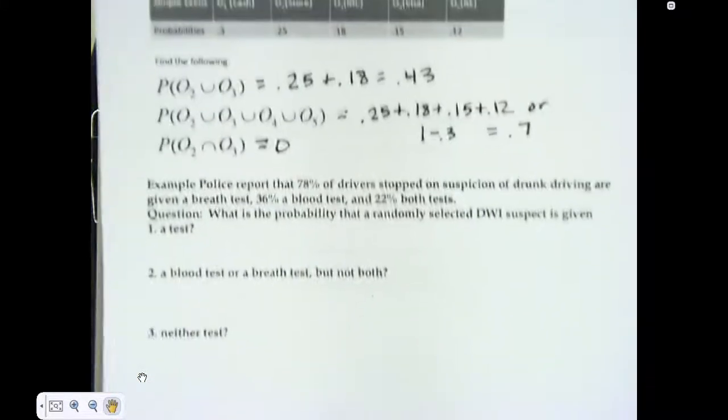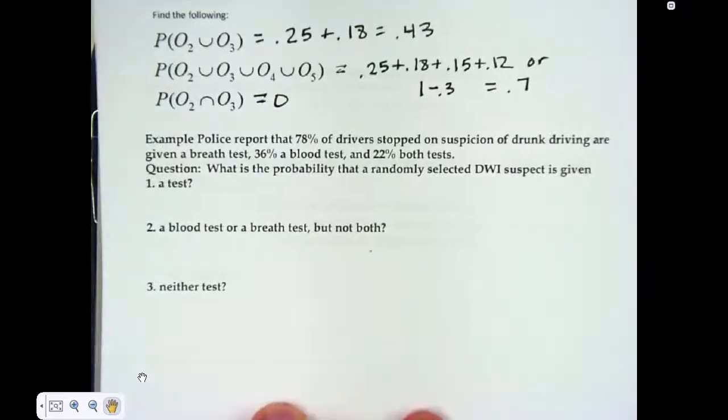Now, our last example problem. Police report that 78% of drivers stopped on suspicion of drunk driving are given a breath test, 36% a blood test, and 22% both. First, they want the probability of a test. There are some other questions here. If you want to make a Venn diagram for this, you can, or we can use our rules.